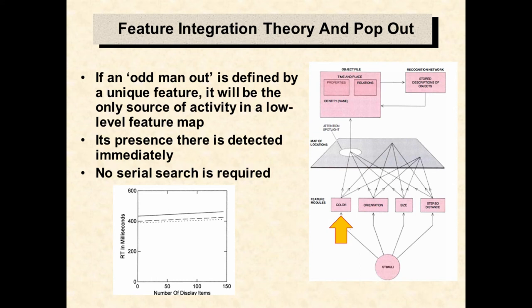For instance, if the target is the only red object in a display, it will be the only source of activity in the red color map. It can be detected immediately without serial search from one location to another. The time to find it will not be related to the total number of distractors in the display.